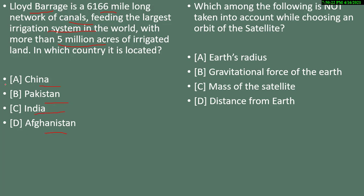Eighth question: which among the following is NOT taken into account while choosing an orbit for a satellite? Options are earth's radius, gravitational force of the earth, mass of the satellite, or distance from the earth. The correct answer is mass of the satellite — the mass of the satellite plays no role when it is orbiting the earth.